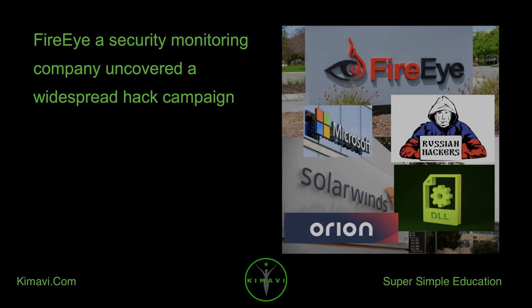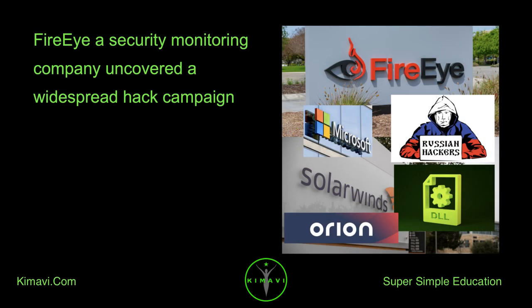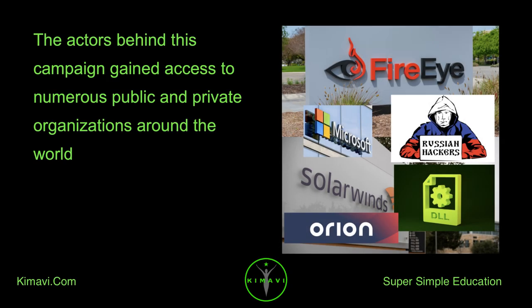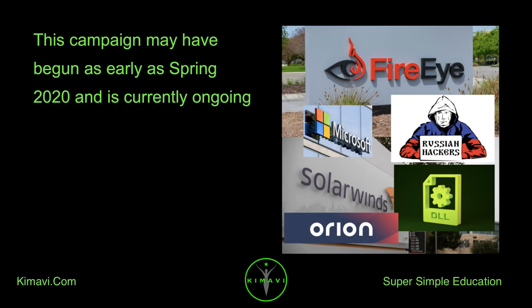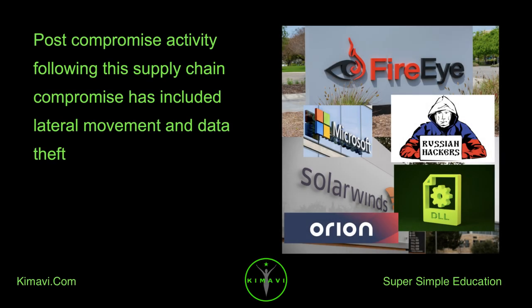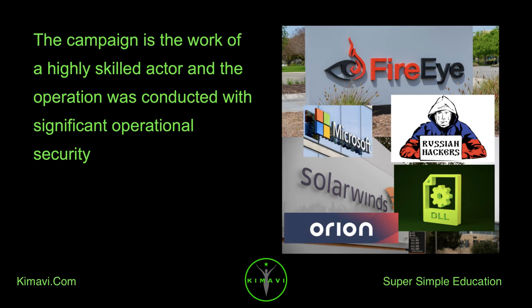FireEye, a security monitoring company, uncovered a widespread threat campaign. The actors behind this campaign gained access to numerous public and private organizations around the world. They gained access to victims via trojanized updates to SolarWinds IT monitoring and management software. This campaign may have begun as early as spring 2020 and is currently ongoing. Post-compromise activity has included lateral movement and data theft. The campaign is the work of a highly skilled actor, and the operation was conducted with significant operational security.